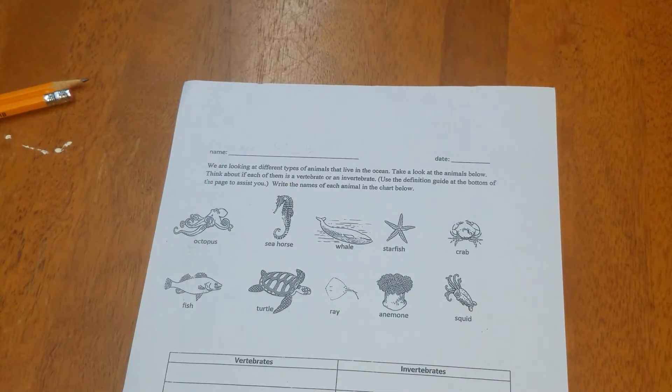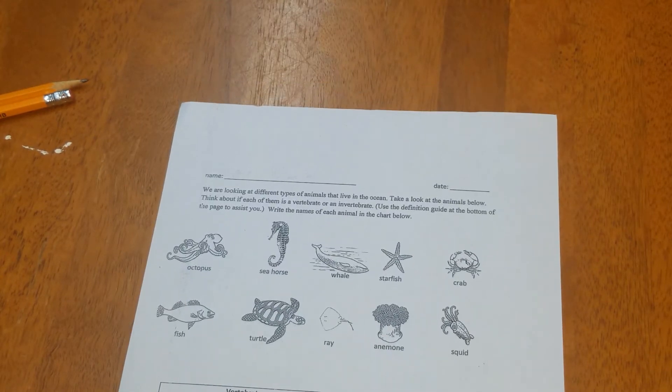We are looking at different types of animals that live in the ocean. Take a look at the animals below. Think about if each of them is a vertebrate or an invertebrate.